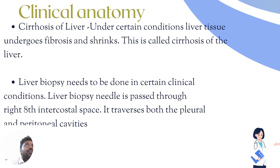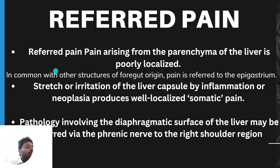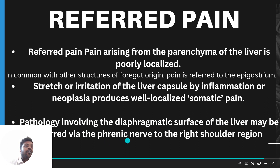Clinical anatomy: cirrhosis of the liver occurs when, under certain conditions, liver tissue undergoes fibrosis and shrinks. The second clinical point is liver biopsy, which is done under certain clinical conditions — the biopsy needle is passed through the right eighth intercostal space. Referred pain arising from the parenchyma of the liver is poorly localized; in common with other structures of foregut origin, pain is referred to the epigastrium. Irritation of the liver capsule by inflammation or neoplasia produces well-defined localized somatic pain. Pathology involving the diaphragmatic surface of the liver may be referred via the phrenic nerve to the right shoulder region.